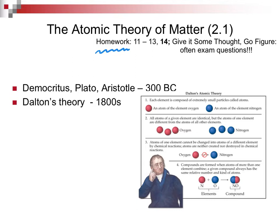Atomic theory of matter, section 2.1. People like Plato and Aristotle made ideas about what an atom could be around 300 BC. It's almost 2,000 years before Dalton's theory came into play. Dalton had four parts to his theory.